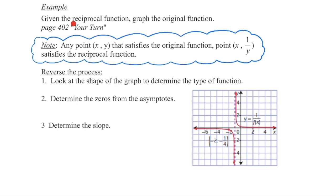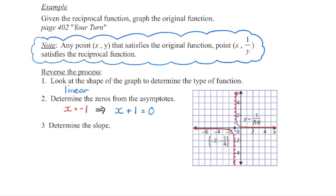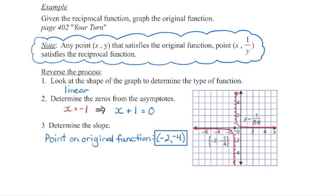The last thing we want to look at: if we're given the reciprocal function, can we determine both the equation and the graph of the original function? We know that any point on the original function — if we take the reciprocal of that y-coordinate — that point will appear on the reciprocal function. From this graph I can tell the original function was linear. The vertical asymptote lies where x-intercepts were on the original graph — the vertical asymptote is x equals negative 1, so on the original function we have an x-intercept at negative 1. The factor (x + 1) appears in the original equation. They've identified a point at (−2, −1/4) on the reciprocal graph, so reciprocating that y-coordinate gives a point at (−2, −4) on the original graph.